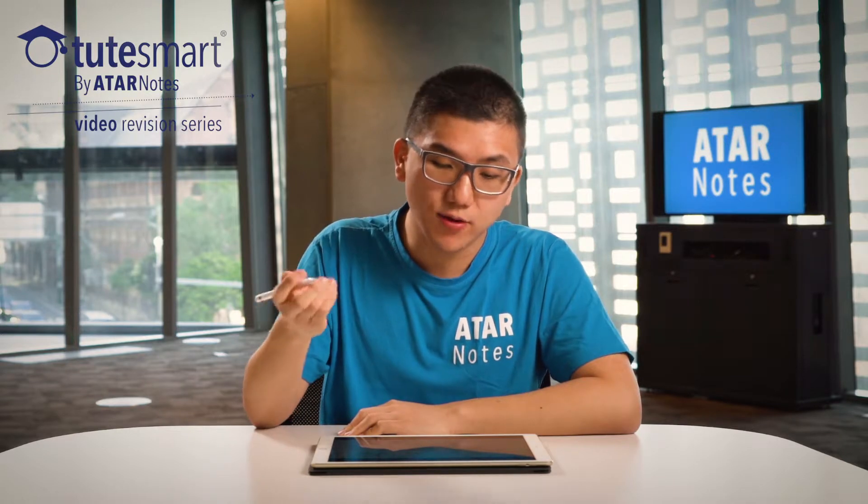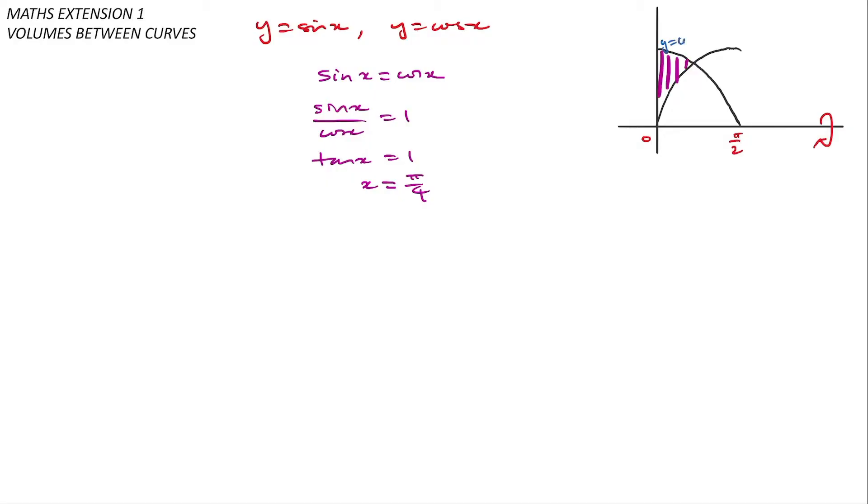Here I'll consider a fancier example where I have y equals sin x and y equals cos x, which I'll label for your convenience. What I want to do is take this region that I have now shaded and rotate it about the x-axis to form a solid, and then I want to compute the volume of that solid.